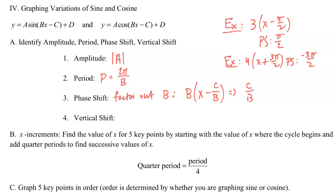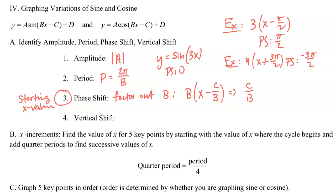The phase shift is always your starting x value — that's what the phase shift represents. It tells you where you begin graphing on the x-axis. If your function is just y equals sine of 3x with no plus or minus after the 3x, then the phase shift is 0, meaning 0 is the starting x value when you graph your five points.